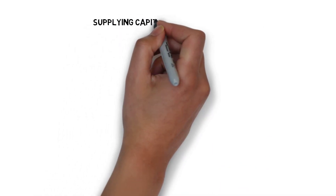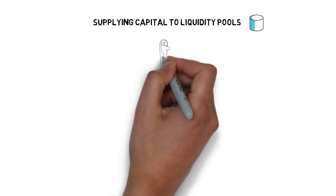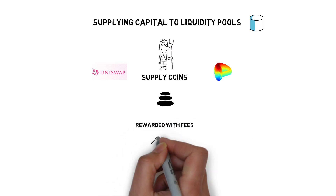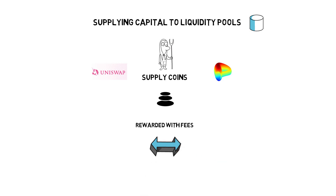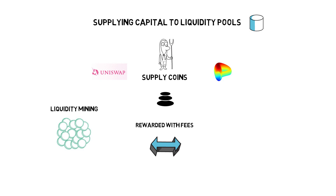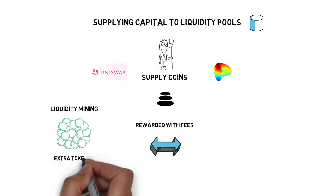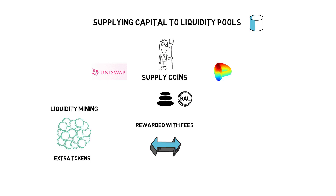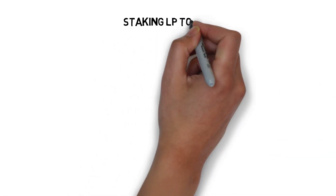Yield farmers can also supply coins to one of the liquidity pools in protocols like Uniswap, Balancer or Curve and get rewarded with fees that are charged for swapping different tokens. Liquidity mining can supercharge this as well — by supplying coins to certain liquidity pools, farmers are rewarded with extra tokens. Balancer is a good example of a protocol that rewards liquidity pool suppliers with extra BAL tokens, increasing their APY.